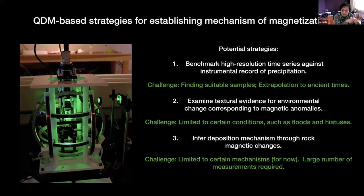Third, inferring the deposition mechanism through rock magnetic changes. We've demonstrated a way forward for looking at a flood mechanism, but there are other mechanisms we would hope to develop rock magnetic proxies for, and this approach is relatively labor intensive. There are also other features in these high-resolution maps — for example, some layers are very continuous and others are relatively discrete, potentially representing different depositional mechanisms that might be separable by their grain assemblage.